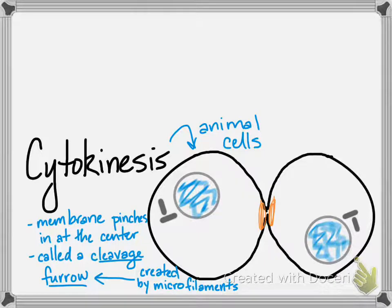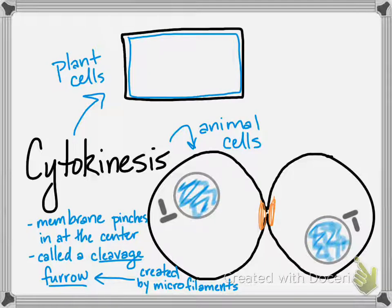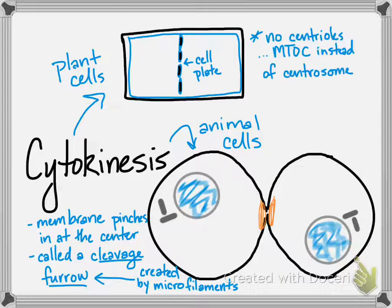This cleavage furrow process is only in animal cells, because our membranes are flexible. In a plant cell, there's a cell wall around the cell membrane, so the membrane can't flex and can't form a furrow. Instead, what happens is called a cell plate — vesicles full of cell wall material line up at the center, and as they fuse together, the cell wall is left in place. Additionally, plant cells have no centrioles, so their centrosomes — more properly called microtubule organizing centers — lack the two pairs of centrioles found in animal cells.